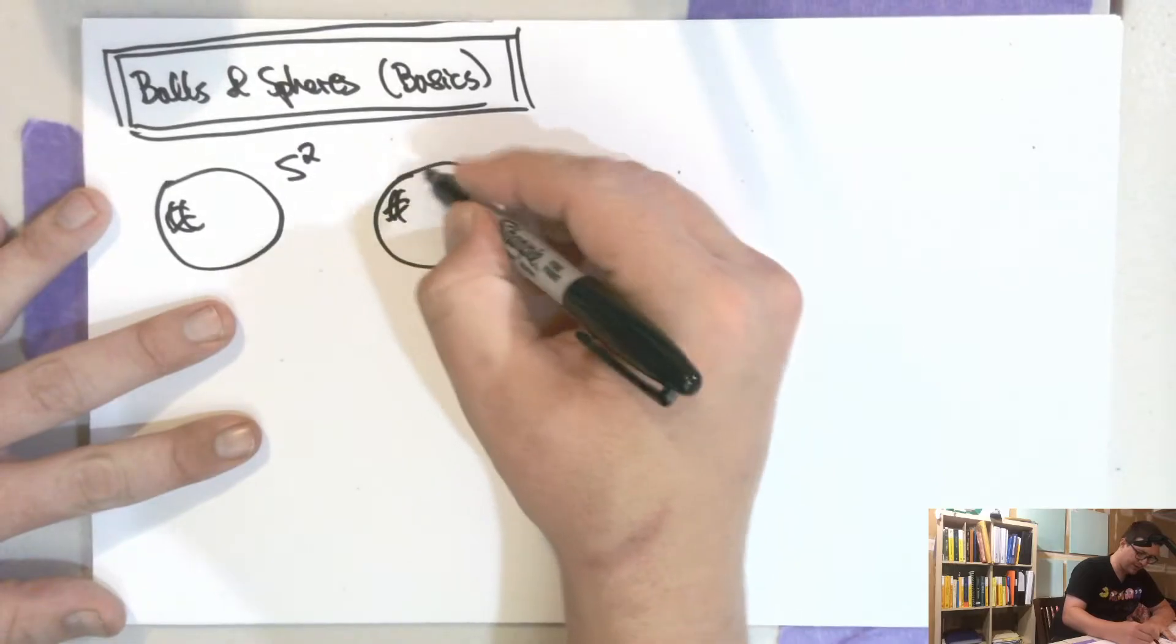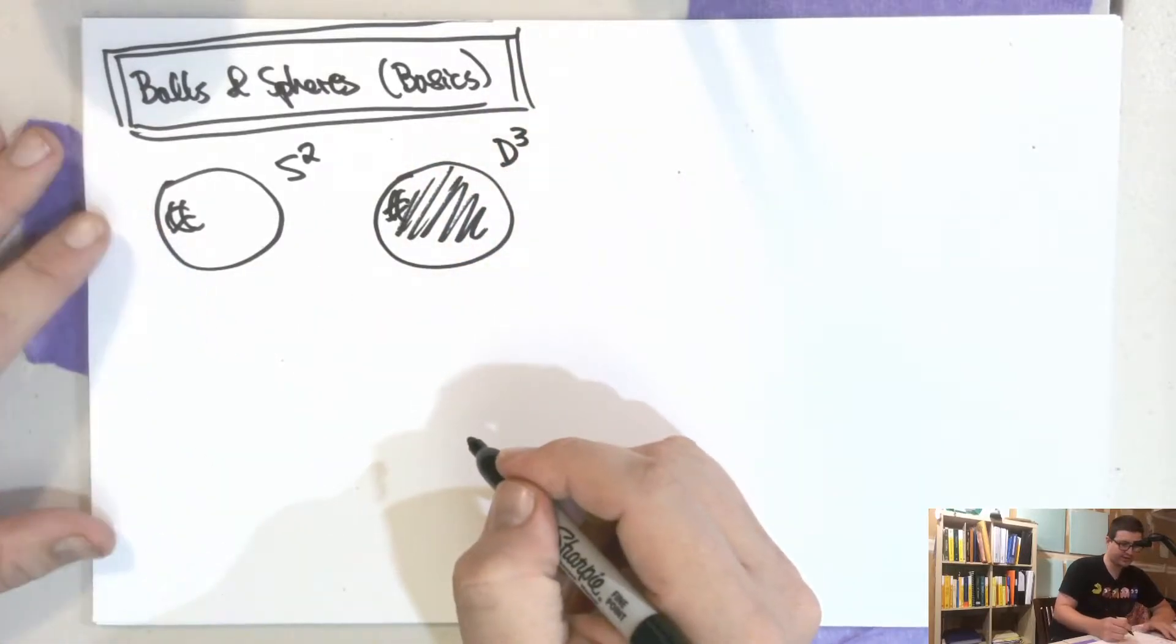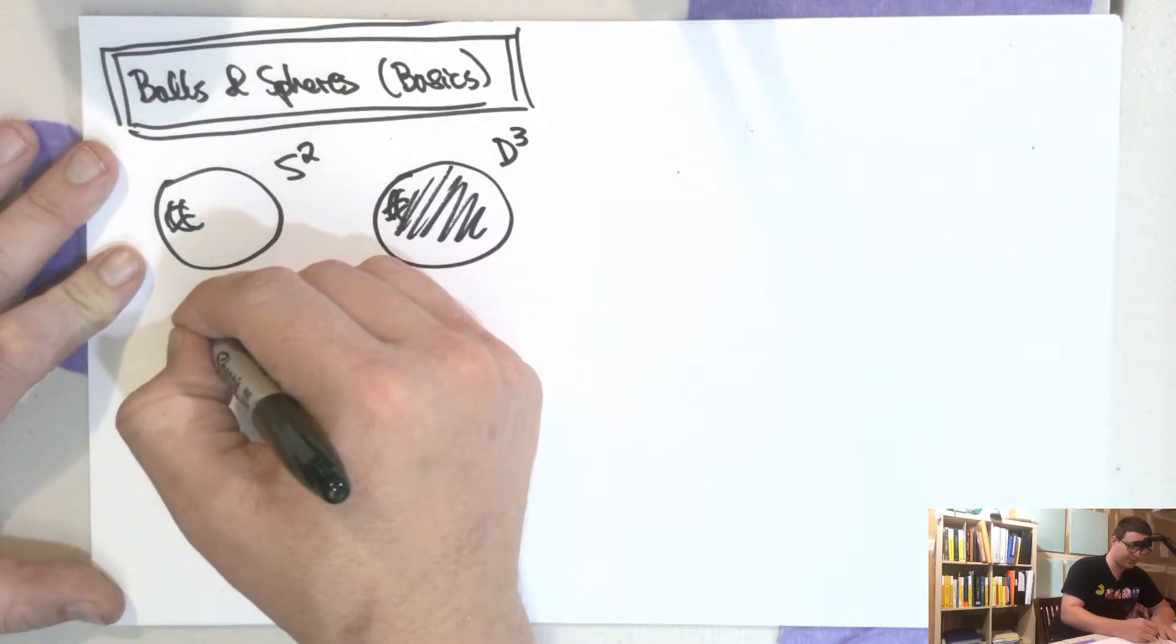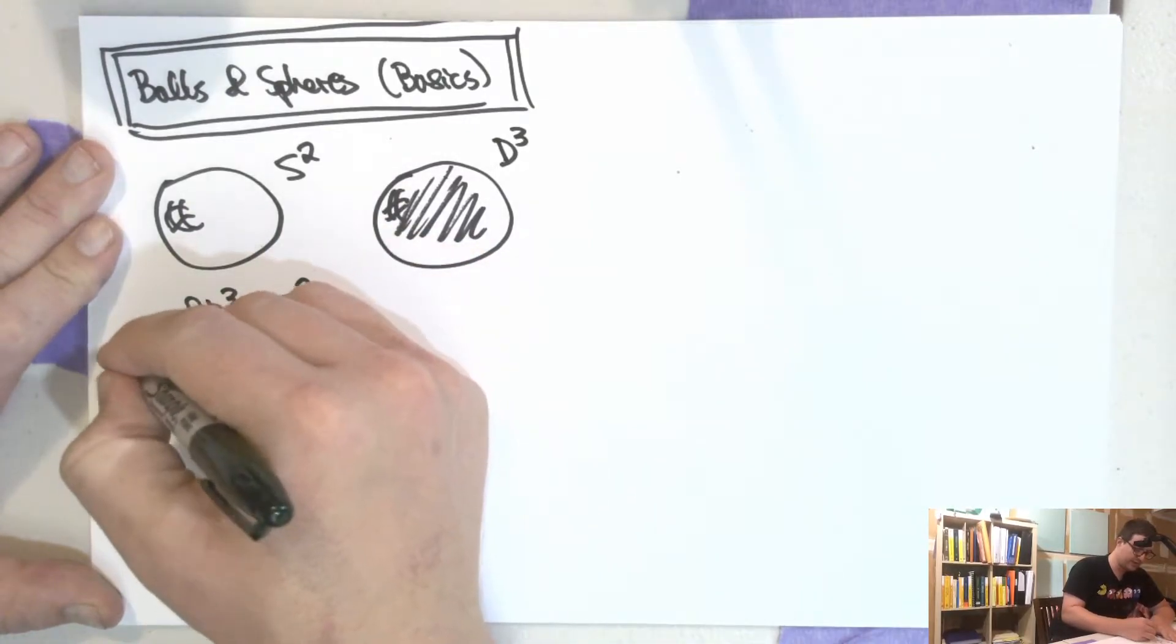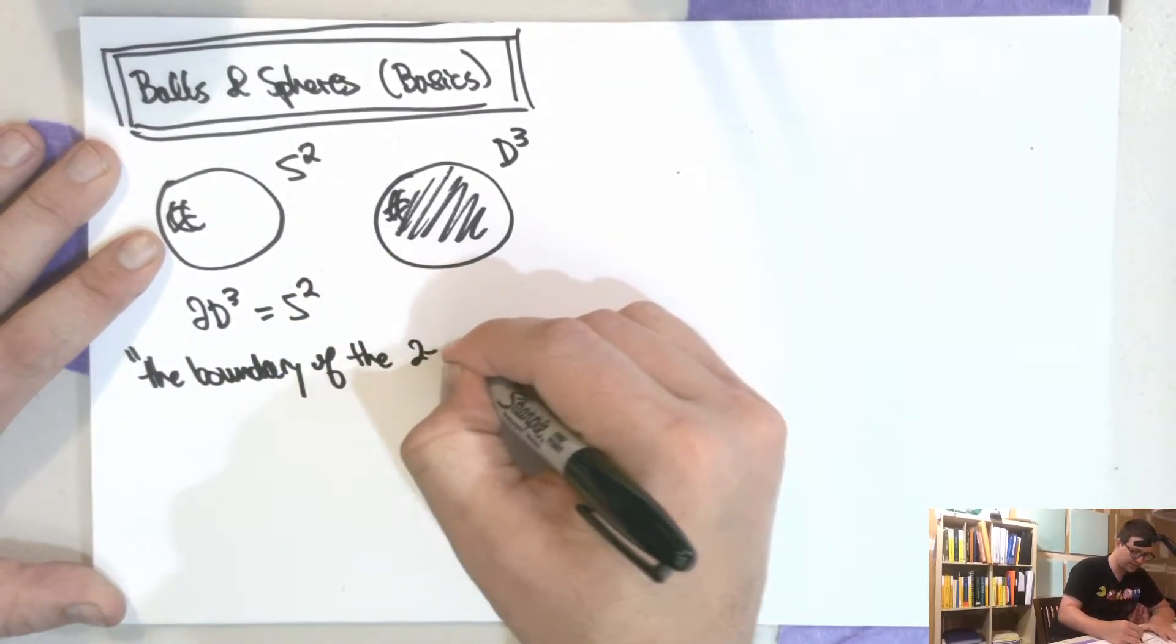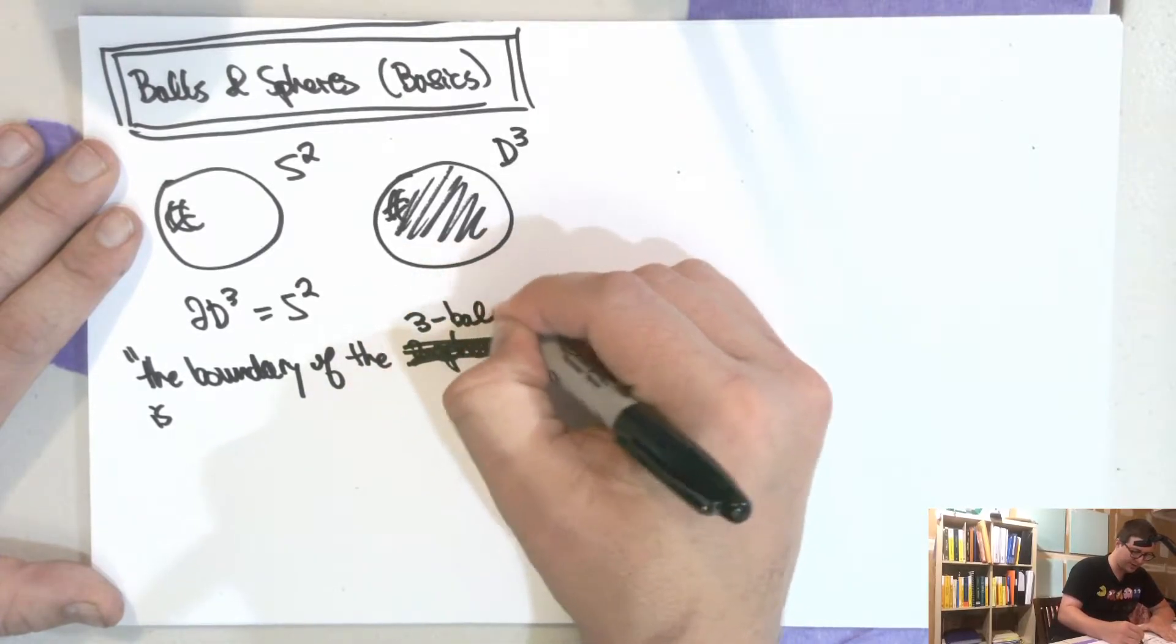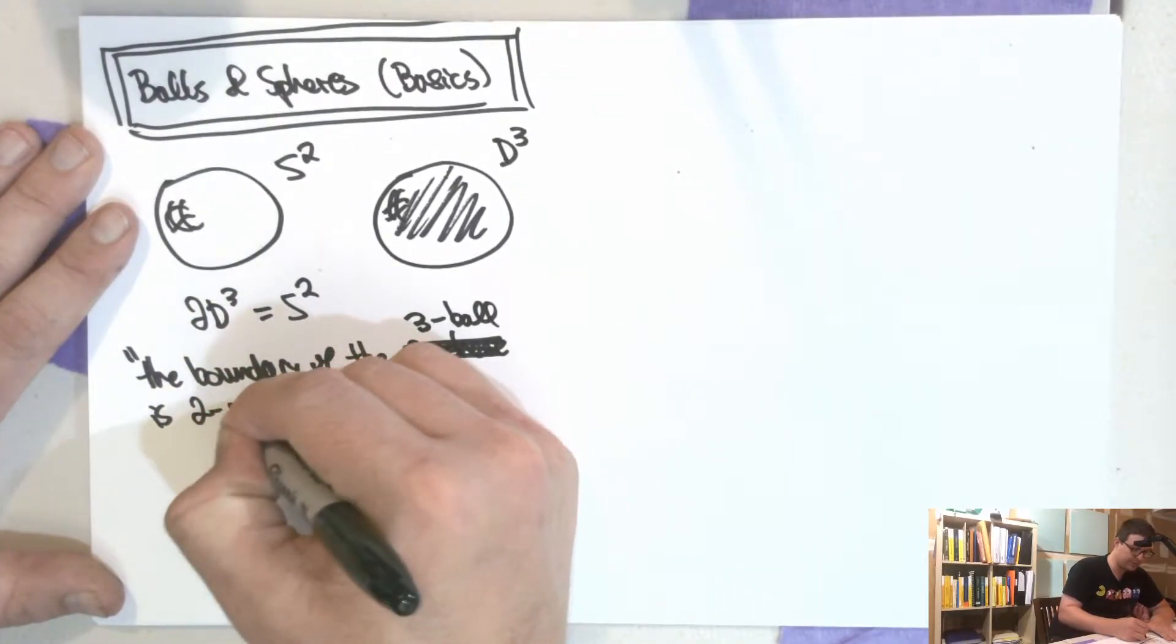So if you were to have the filled-in thing, this would be D3. So that's the three-dimensional ball, the three-dimensional disc. The boundary of this thing is this. And so the boundary, so sometimes we write that as ∂D3 = S2. The boundary of the three-ball, the three-dimensional ball is the two-sphere.